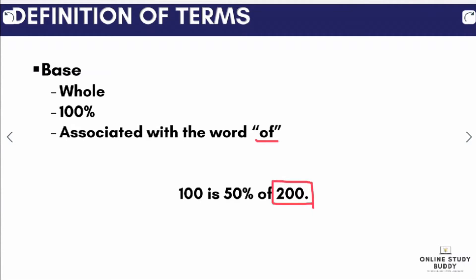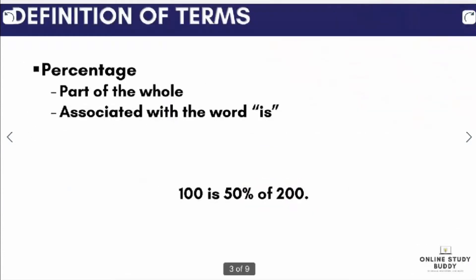Next, the percentage. The percentage is the part of the whole, and it is associated with the word 'is'. So in our previous example, 100 is 50% of 200 — the number associated with 'is' is 100. Therefore, in this example, 100 is the percentage.